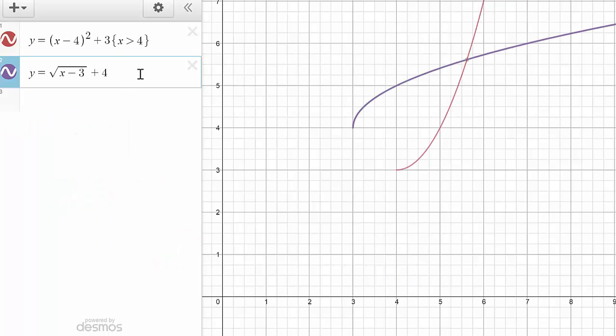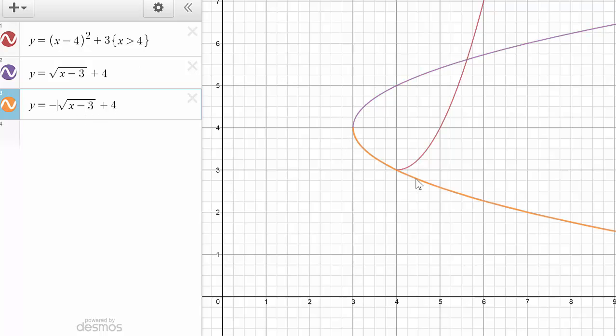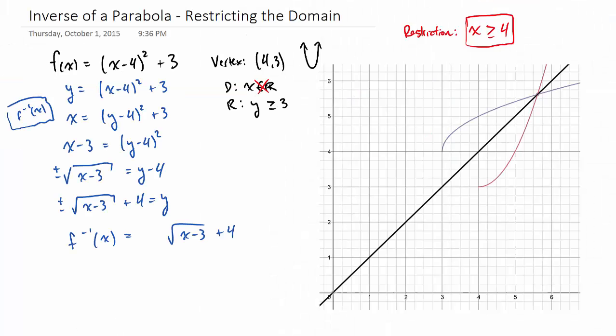And if we plot this in, you see, there it is. Now it's not so much a sideways parabola, it's just the upper half. You see an orange there, that would have been the lower half, but we've restricted the original function, so that lower half no longer appears on the inverse.